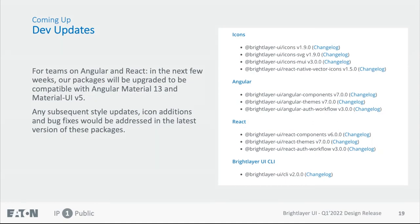Coming up, a quick note on dev updates for teams on Angular and React. In the next few weeks, all our packages will be upgraded to be compatible with Angular Material 13, Material UI version 5, and React version 17. Any subsequent style updates from the design side — such as icon additions, theme changes, and bug fixes — will be addressed in the latest version of these packages. So if your team plans to pick up any changes, your developers will need to upgrade their package.json to the latest version.